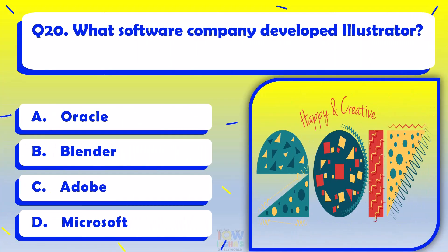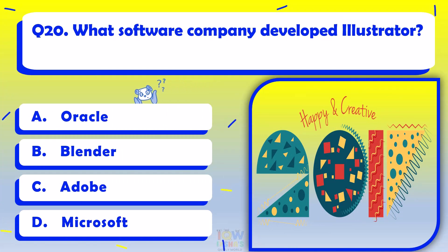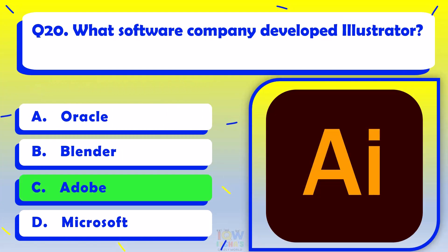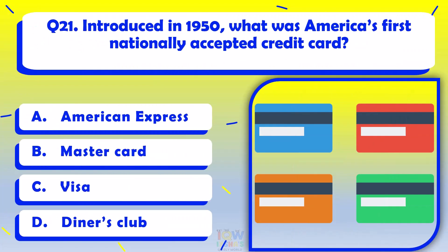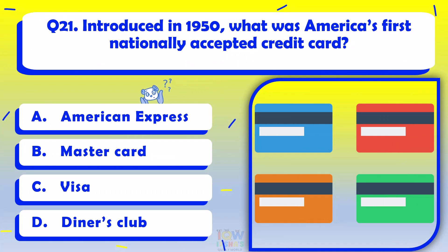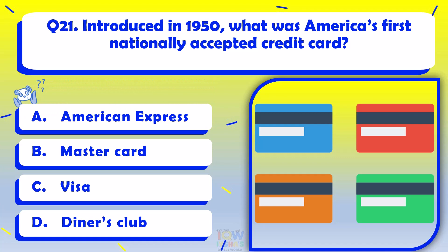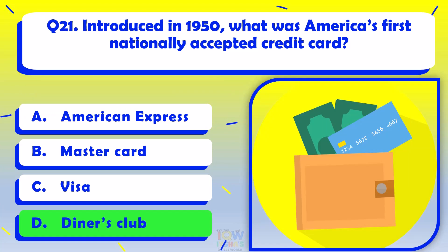What software company developed Illustrator? Adobe. Introduced in 1950, what was America's first nationally accepted credit card? Diners Club.